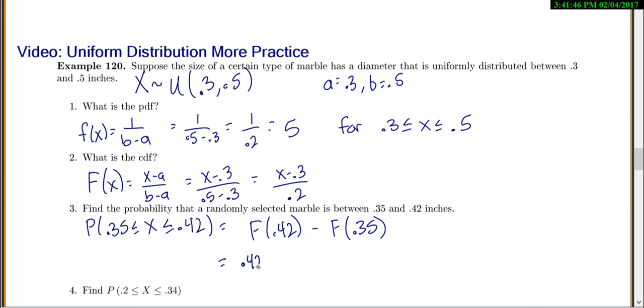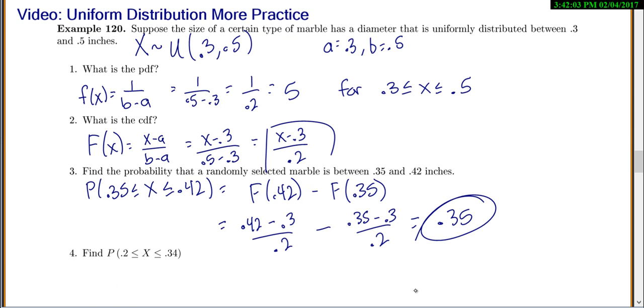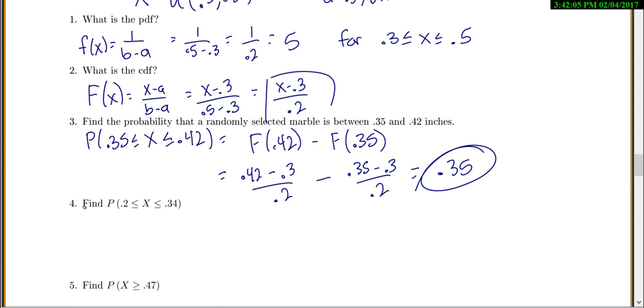So in this case, it's going to be 0.42, so we're using the CDF. 0.42 minus 0.3 over 0.2, minus 0.35 minus 0.3 over 0.2. And this gives me, just coincidentally, 0.35. That's how you can find the probability.